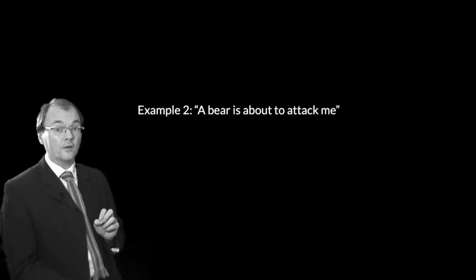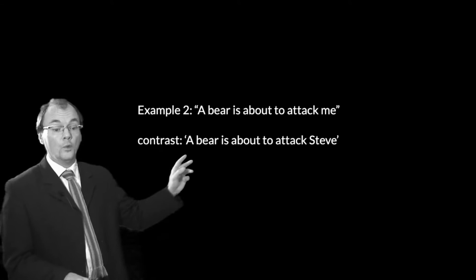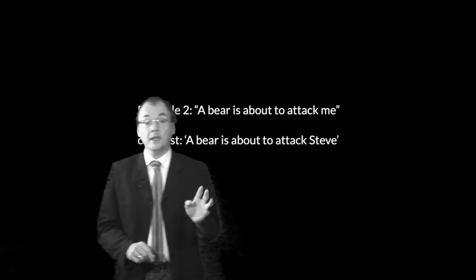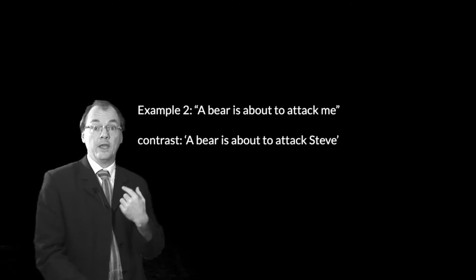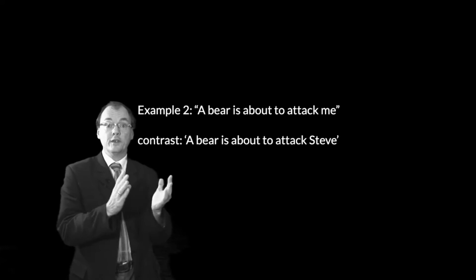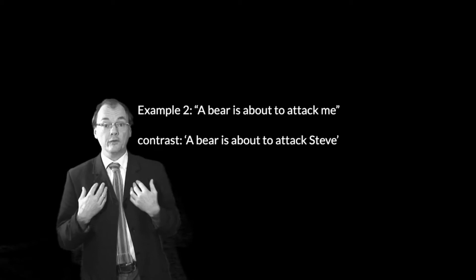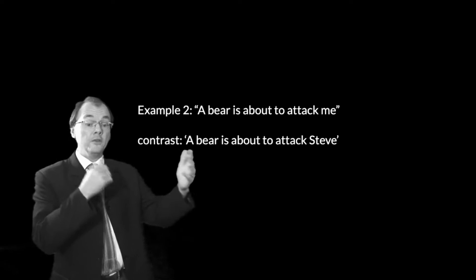Second example, getting a bit more complicated. Consider 'a bear is about to attack me.' We can contrast two thoughts: one involving a name — 'a bear is about to attack Steve' — and the other involving an indexical — 'a bear is about to attack me.' Perry points out: I might have absolutely terrible amnesia, knowing nothing true about myself — not my name, where I was born, how old I am, my gender. In that case, a thought like 'a bear is about to attack Steve' will have quite different significance from 'a bear is about to attack me.' When I'm thinking 'a bear is about to attack me,' I'm definitely curling up into a ball. But because of my amnesia, there's no other thought involving a name or description that will do the same thing, because I won't know that that name or description applies to me.